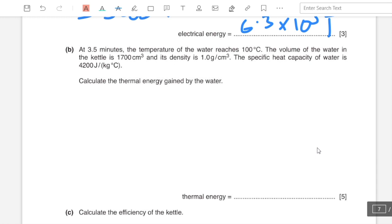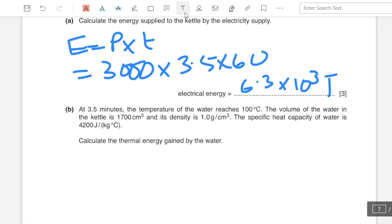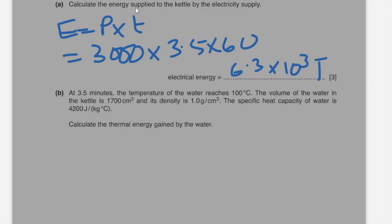Part b: at 3.5 minutes the temperature of water reaches 100 degrees Celsius. The volume of water in the kettle is 1700 cm3 and its density is 1 gram per cm3. The specific heat capacity of the water is 4200 joules per kg degree Celsius. Calculate the thermal energy gained by the water. I will start by calculating the change in temperature which is 100 minus 19, which was the initial temperature. This gives the answer as 81 degrees Celsius.